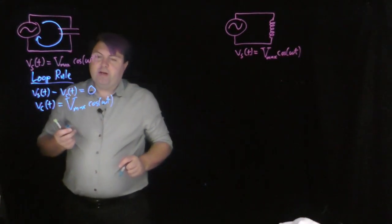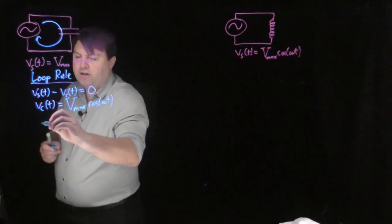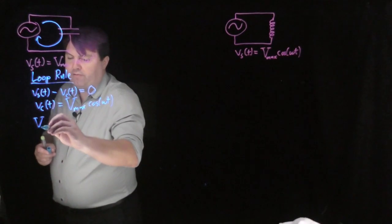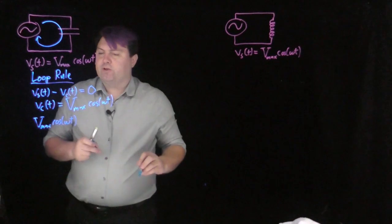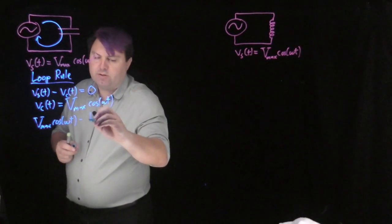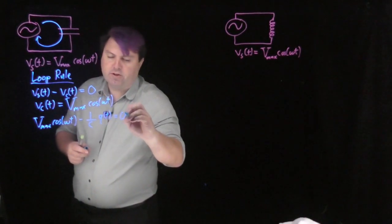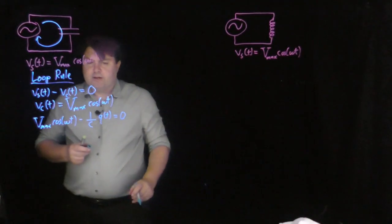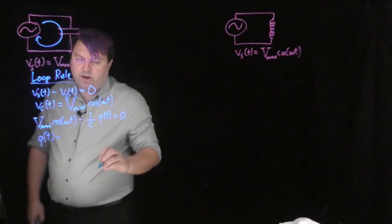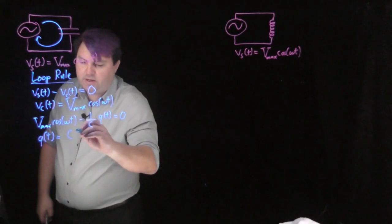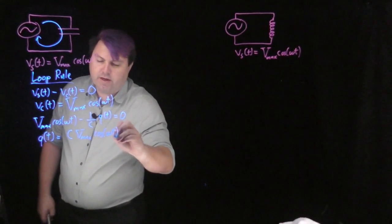Maybe a bit more interesting is if we also use the fact that the voltage of a capacitor is q over C. We have V_max·cos(ωt) as our source voltage minus (1/C)·q(t) equaling zero. Solving for q(t), we get that the charge as a function of time is equal to C times V_max times cosine(ωt).